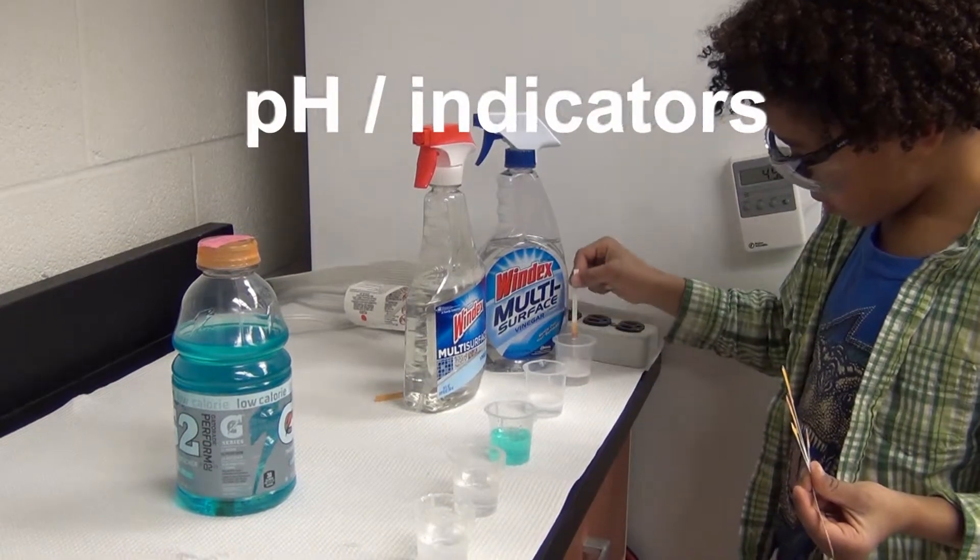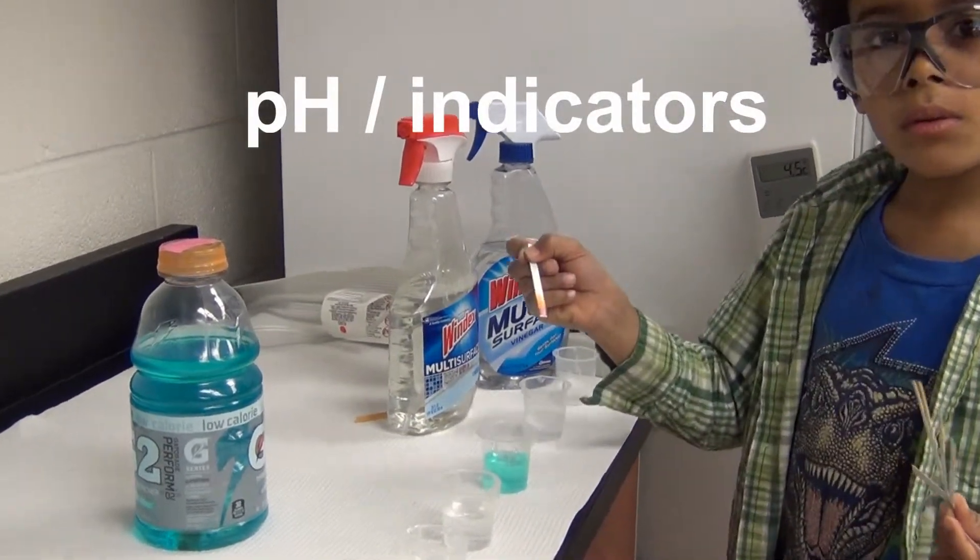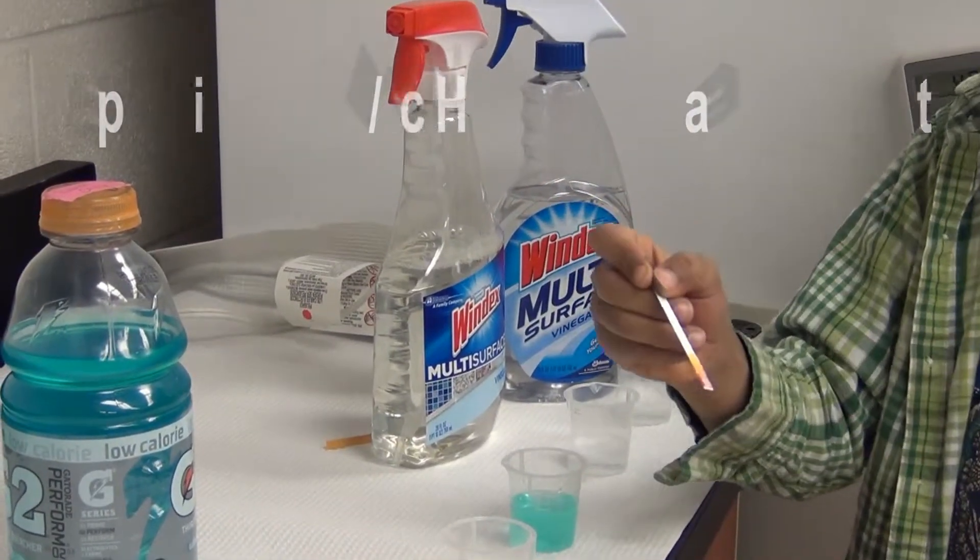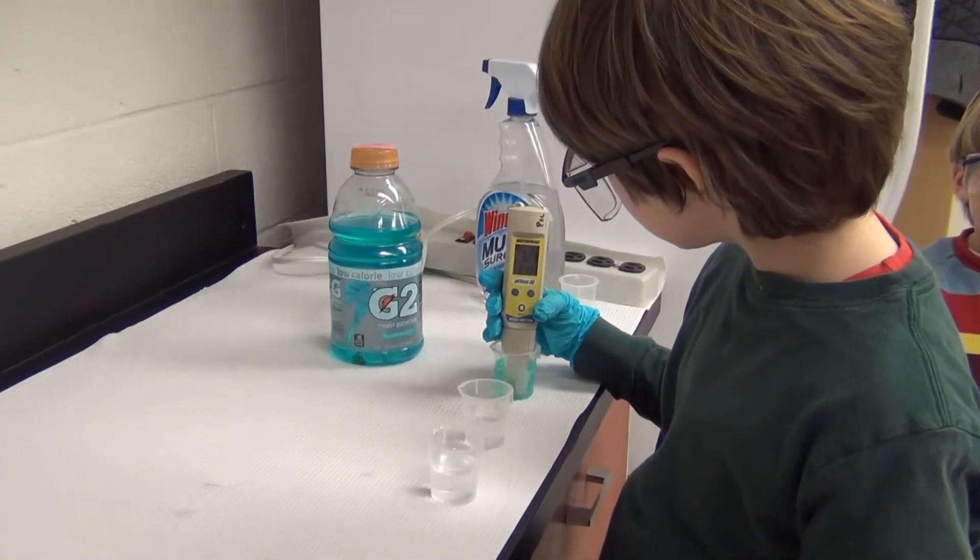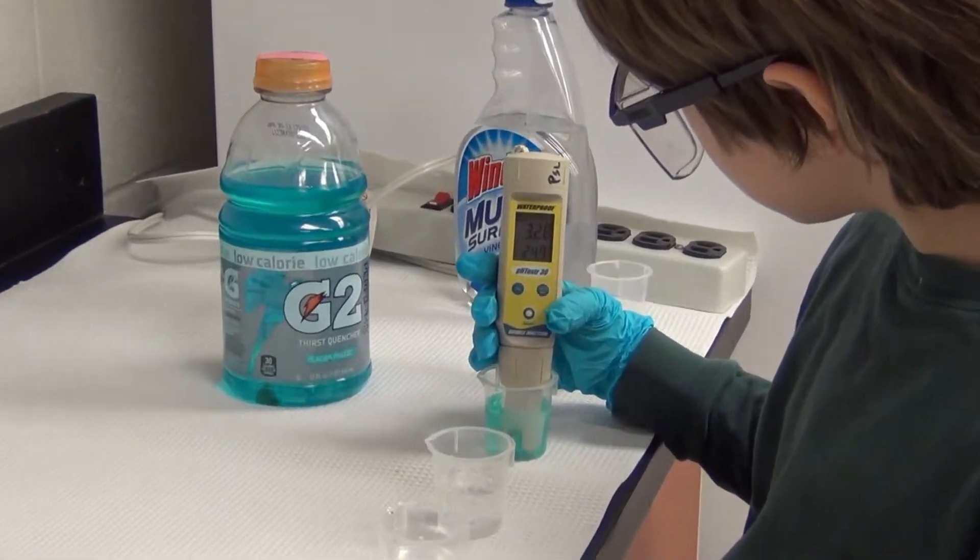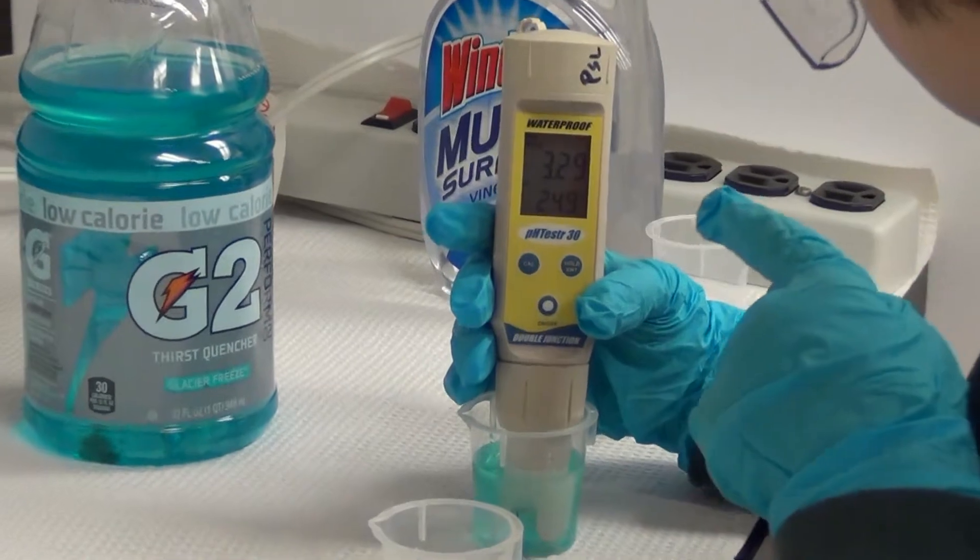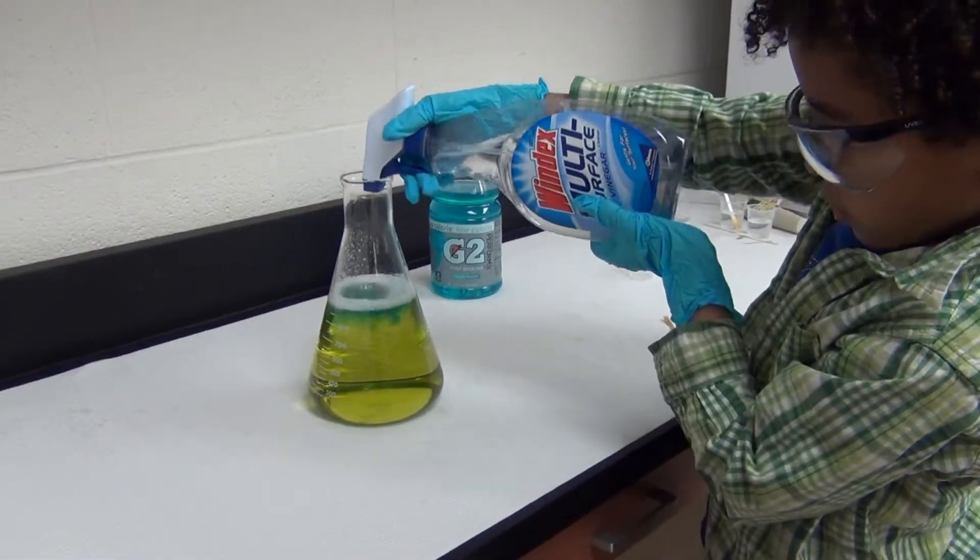pH is an important factor affecting water quality, and it can be measured in a variety of ways. Aqueous solutions with a pH of less than 7 are considered acidic, while those with a pH of greater than 7 are considered basic. A pH of 7.0 is defined as neutral.